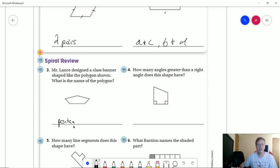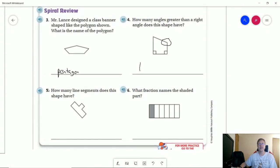For number four, we are looking at how many angles greater than a right angle does this shape have. This would be our angle that would be greater than a right angle because these are both a right angle and this one would be smaller. So we would have one obtuse angle, which would be the name for an angle that is greater than 90 degrees.